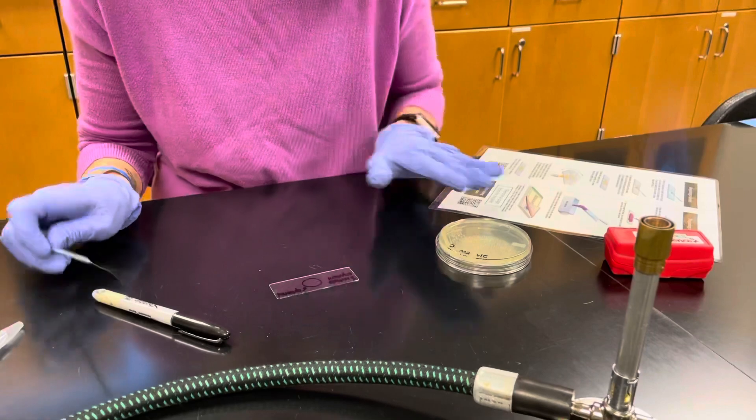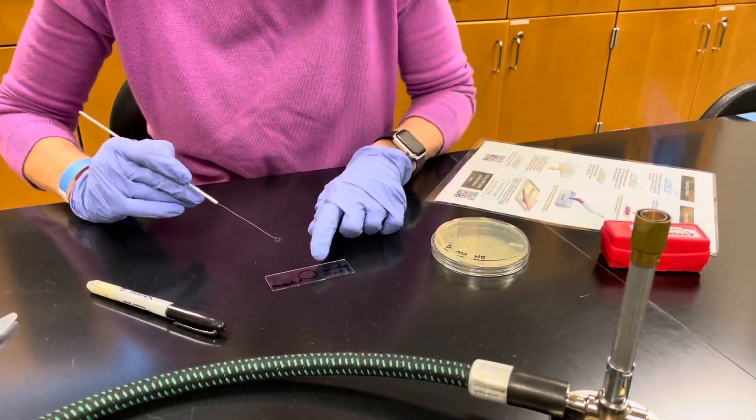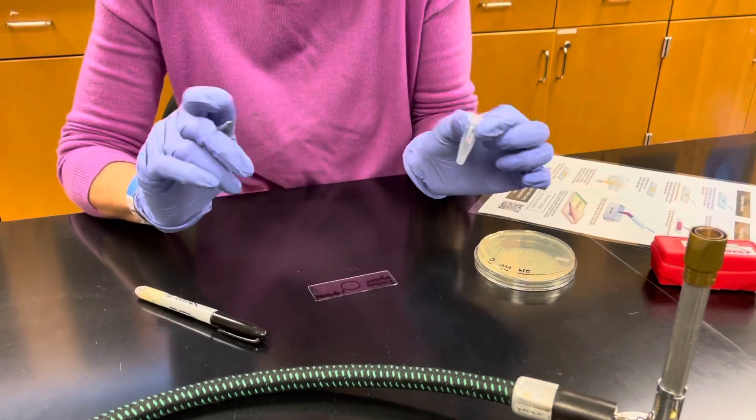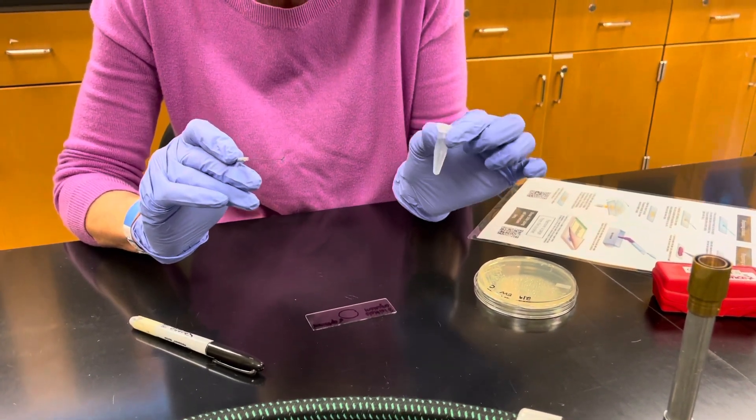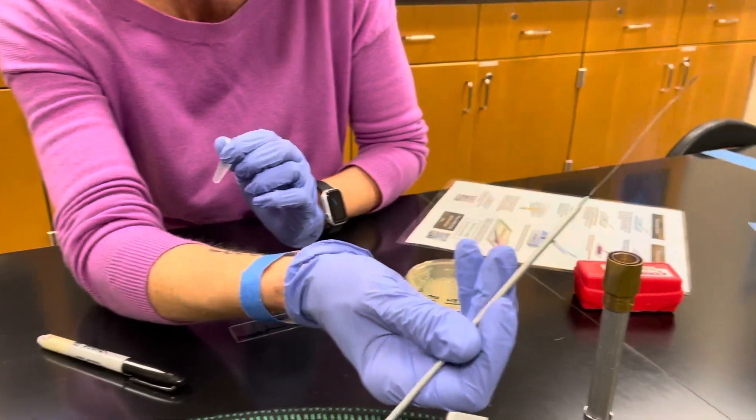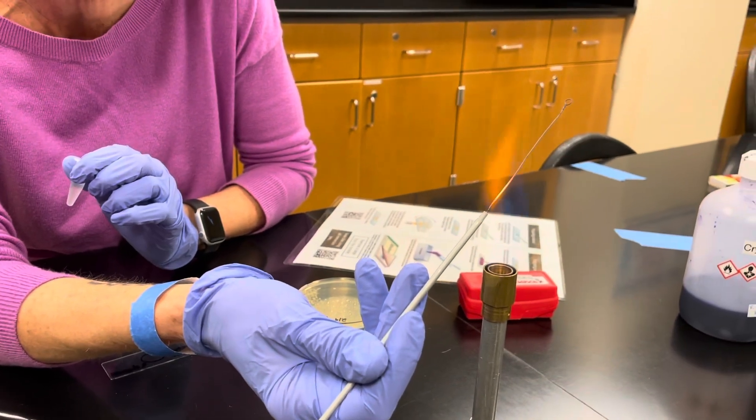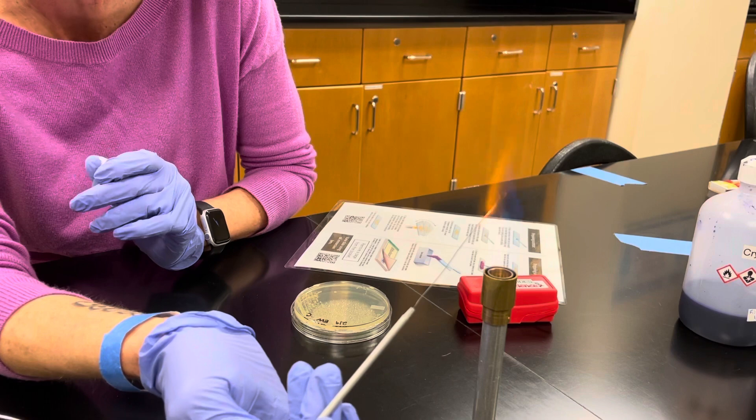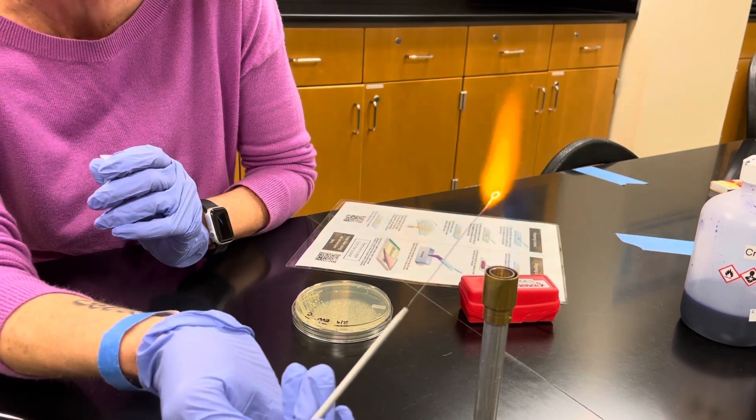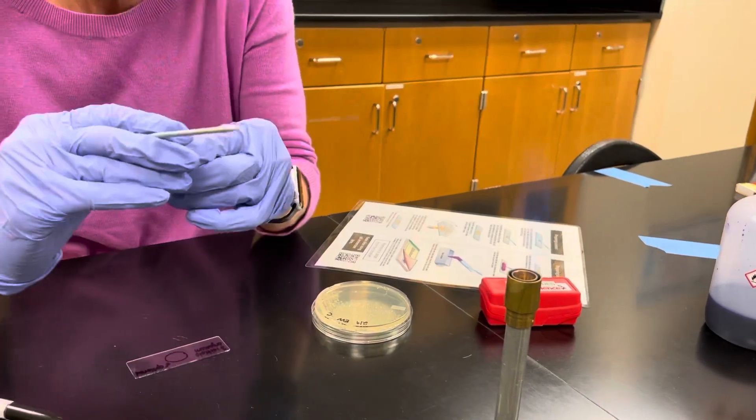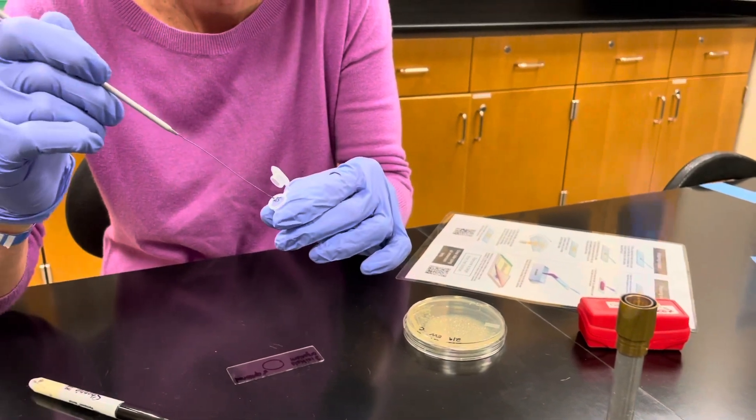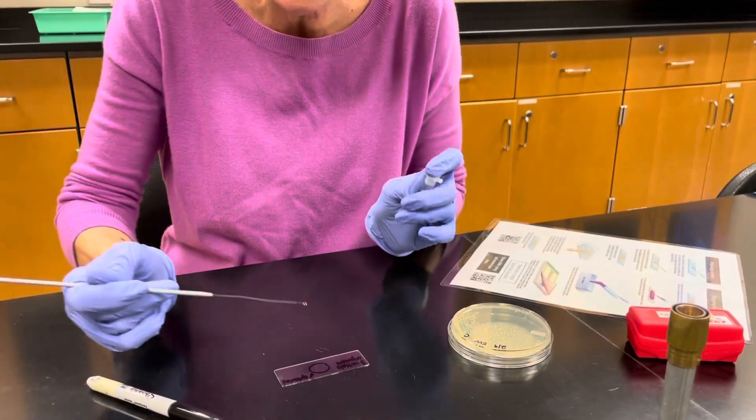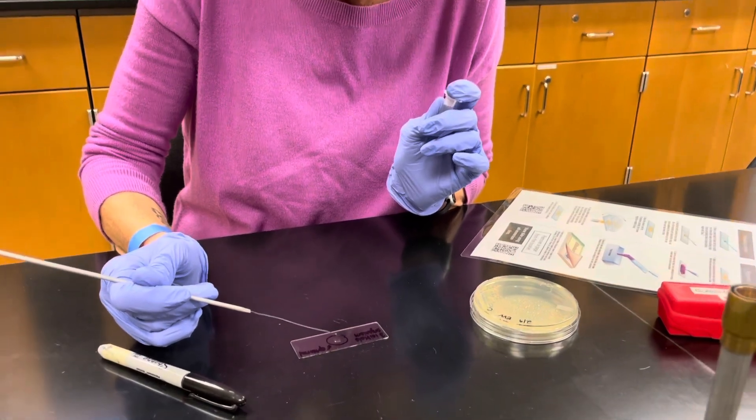Since we are taking bacteria from a plate, we need to get a loopful of water onto our slide. In your kit, you have an Eppendorf tube full of water. We're going to practice using aseptic technique. We're going to flame our loop from the base to the tip. That inner cone is the hottest part of the flame. Go ahead and just get one loopful of water. Place it in the center of your circle.